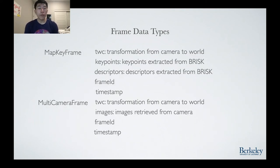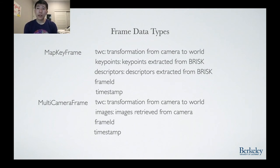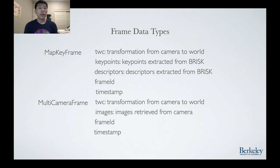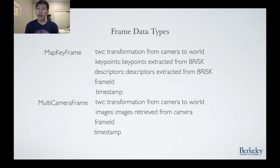The two major frame data types in OpenArc are the map keyframe and the multi-camera frame. The map keyframe is used by SLAM to generate the keyframe map of the environment, storing the position of the frame optimized by SLAM, as well as the keypoints and descriptors extracted from BRISK, in order to be matched with current camera frames for loop closure. This is the back-end data type. The multi-camera frame is the front-end data type. When new frames are retrieved from the camera, they are constructed into a multi-camera frame and SLAM estimates the current camera's pose. If the current frame becomes a keyframe, a map keyframe is constructed from the pose and the extracted features.